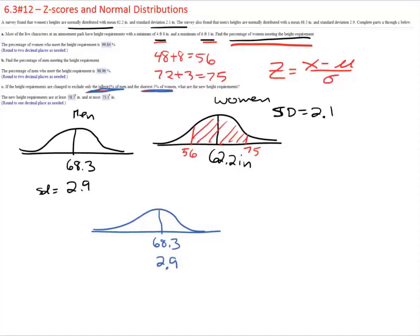They want to exclude the tallest 5% of men, so that means this area here is going to be 5% of my data. And they want to know how tall is that. We're looking for the x that corresponds to that height.